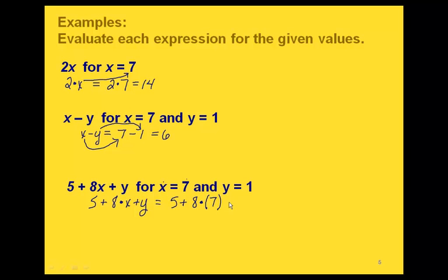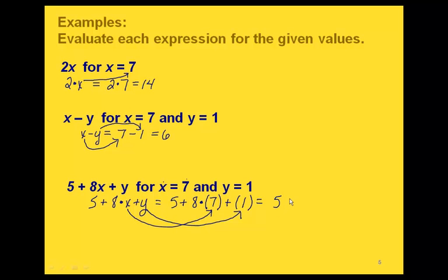We also have variable y, so we put another set of parentheses for y and replace it with 1. The 7 goes with x and the 1 with y. Using order of operations, multiplication comes first: 8 times 7 is 56. Then 5 plus 56 plus 1: 5 plus 56 is 61, plus 1 gives us 62.